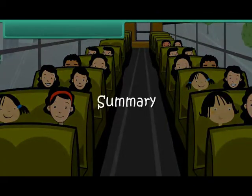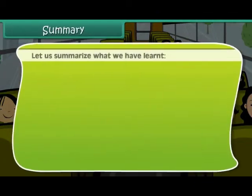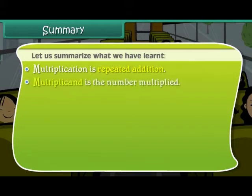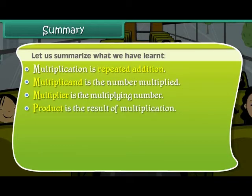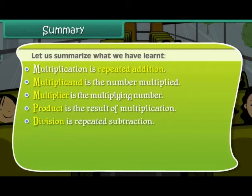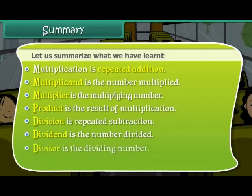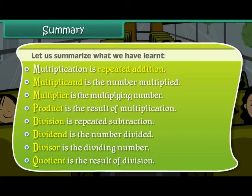Summary. Let us summarize what we have learnt. Multiplication is repeated addition. Multiplicand is the number multiplied. Multiplier is the multiplying number. Product is the result of multiplication. Division is repeated subtraction. Dividend is the number divided. Divisor is the dividing number. Quotient is the result of division.